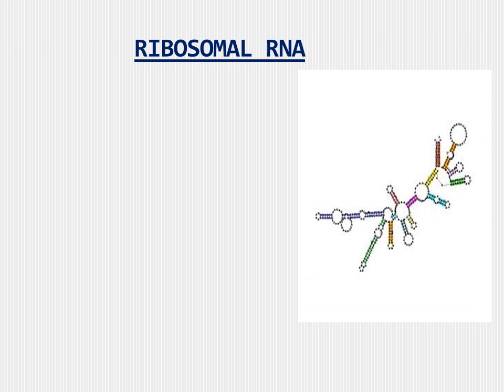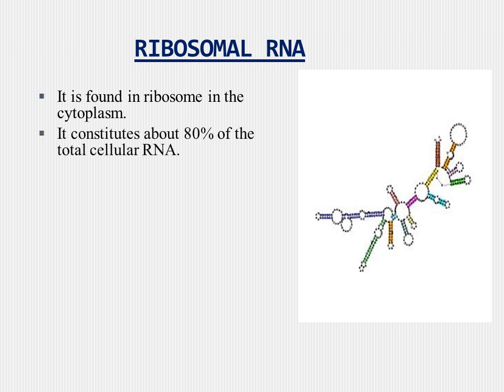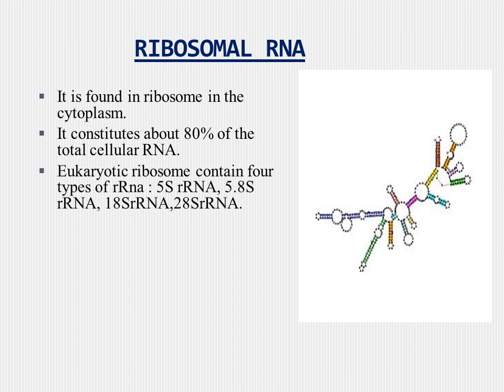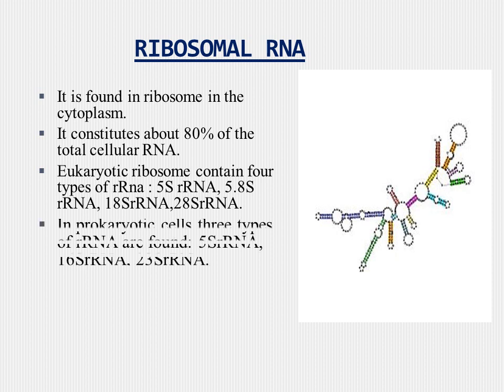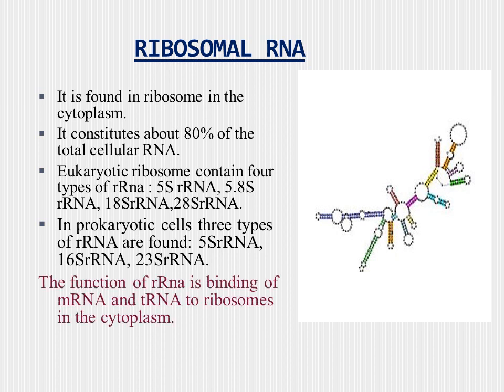Ribosomal RNA is found in the ribosome in the cytoplasm. It constitutes about 80% of the total cellular RNA. Eukaryotic ribosomes contain 4 types of rRNA: 5S, 5.8S, 18S, and 28S rRNA. In prokaryotic cells, 3 types of rRNA are found: 5S, 16S, and 23S rRNA. The function of rRNA is binding of mRNA and tRNA to the ribosome in the cytoplasm.